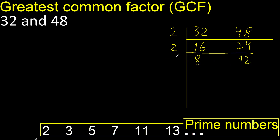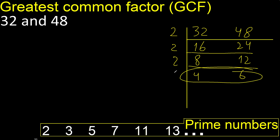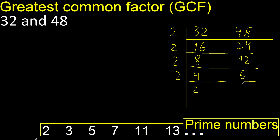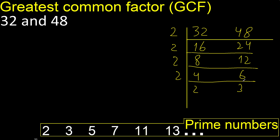Can be divided by 2. 8 divided by 2 is 4. 12 divided by 2 is 6. Can be divided by 2. 4 divided by 2 is 2. 6 divided by 2 is 3. Cannot be divided by 2, because 3 cannot be divided by 2.